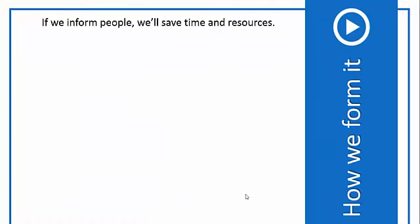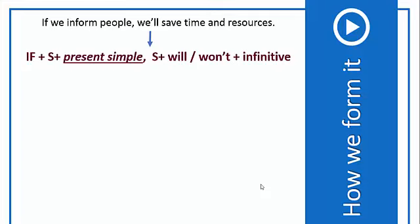Let's look at this example. If we inform people, we'll save time and resources. As you see, we have: if + subject + present simple. And in the second part, we have: subject + will or won't + infinitive.